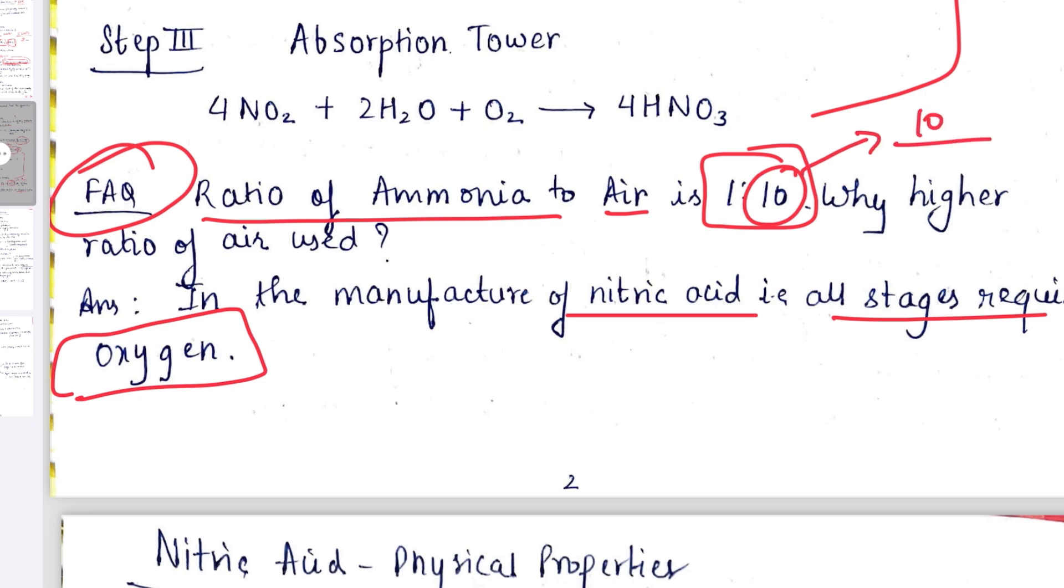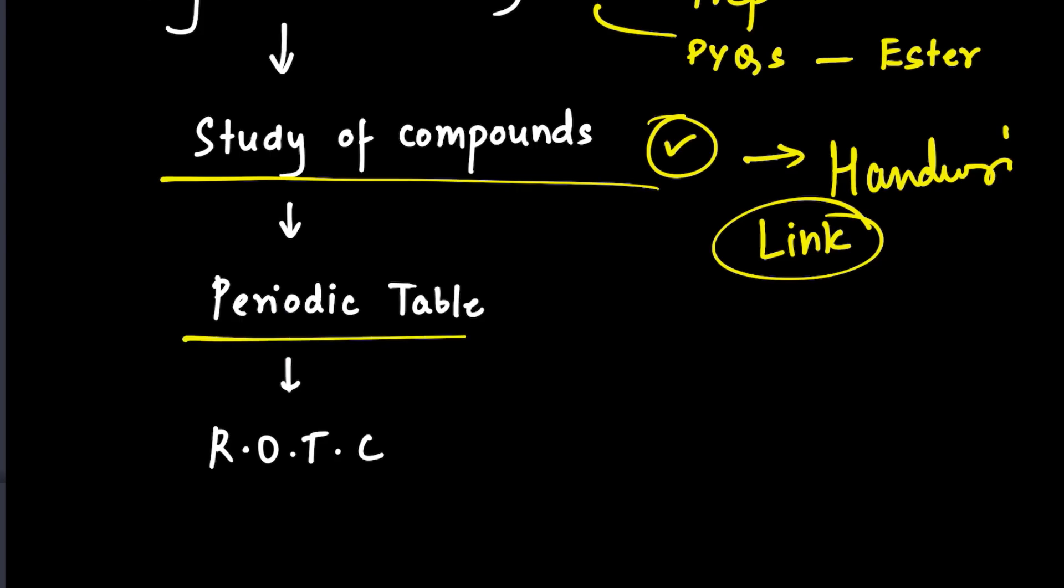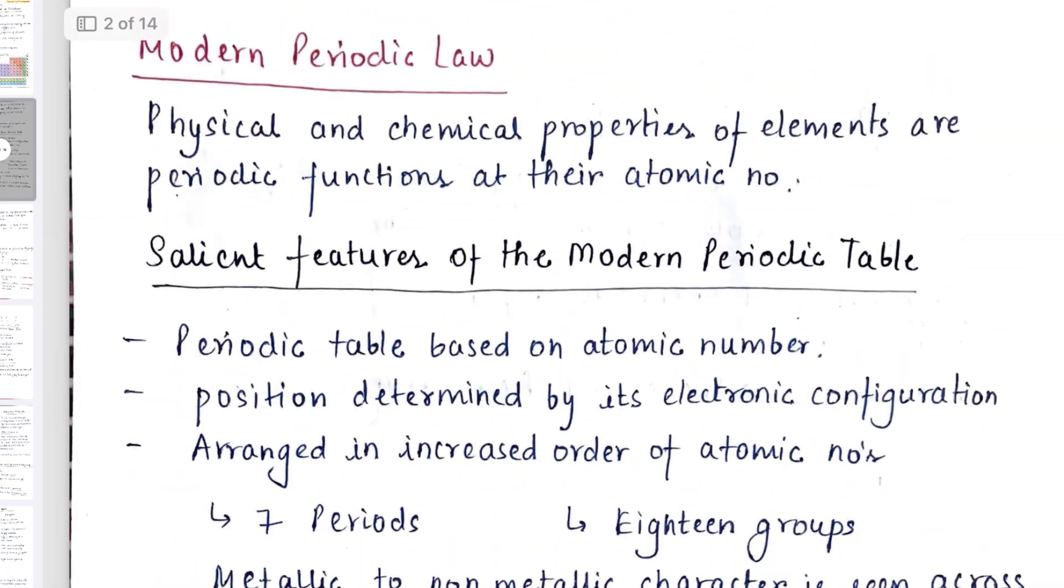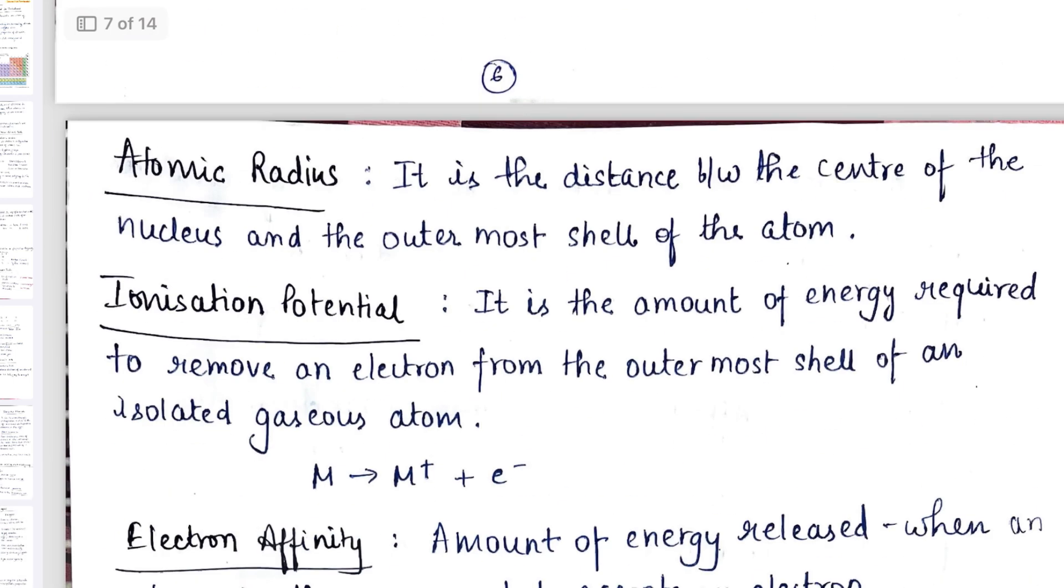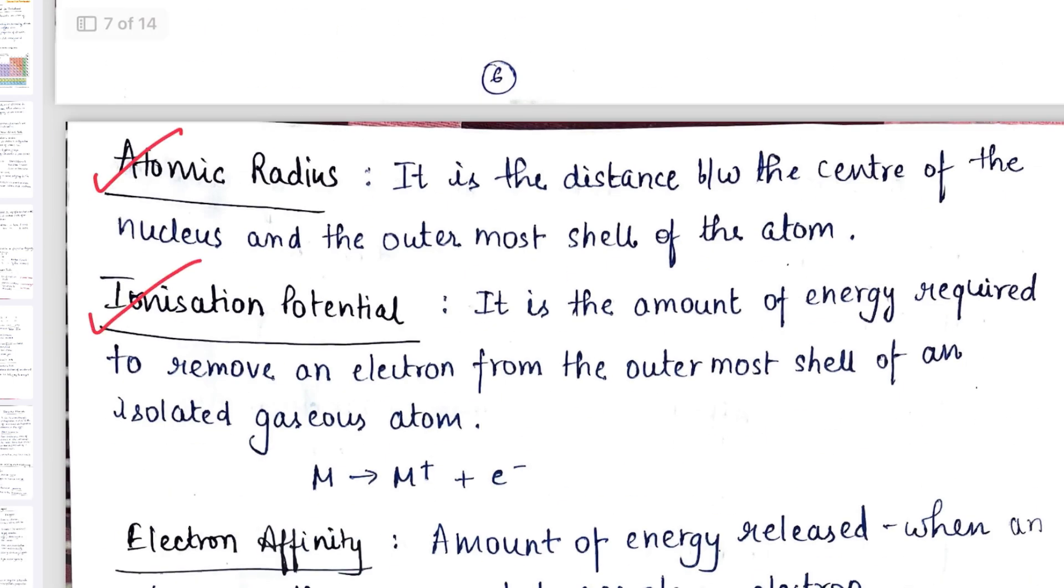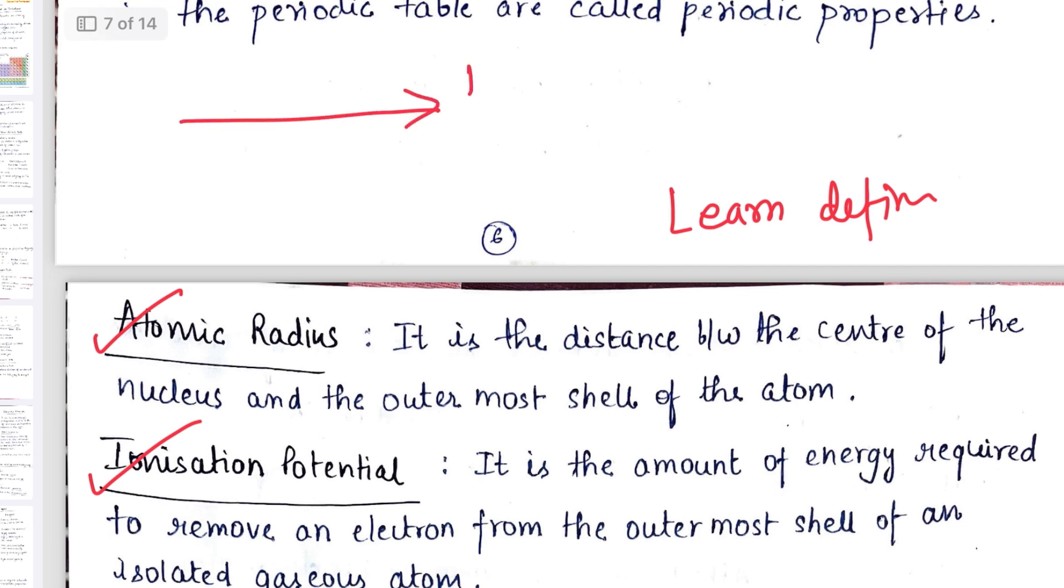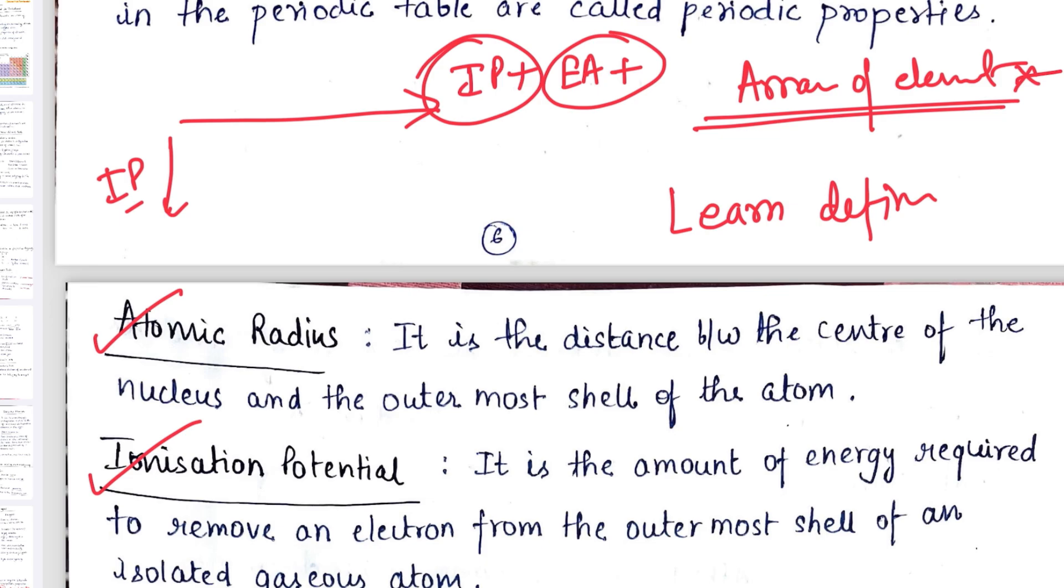When we come to periodic table, I'll just show you questions that are asked from here. All these periodic properties like the atomic radius, ionization potential, electron affinity, you have to learn all the definitions and also they'll ask you the trend. Like IP increases across a period, decreases across a group. What happens to the electron affinity? It also increases. So these trends are asked. An arrangement of the elements are frequently asked.